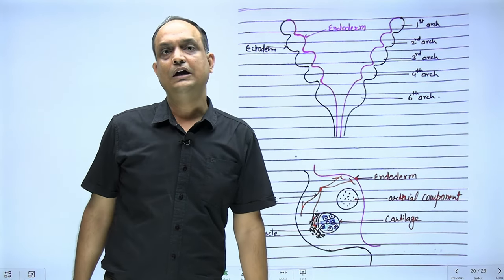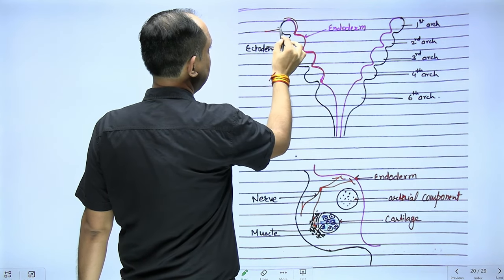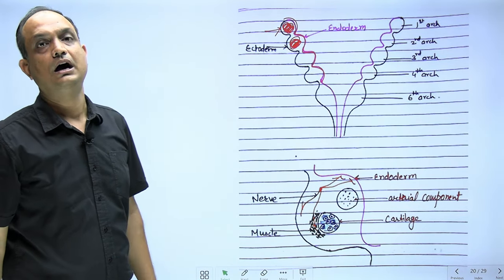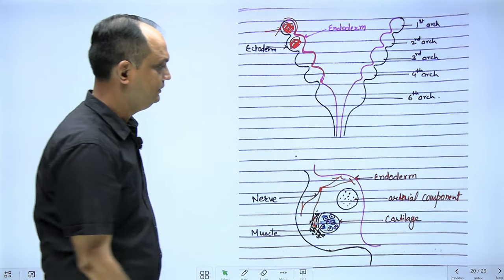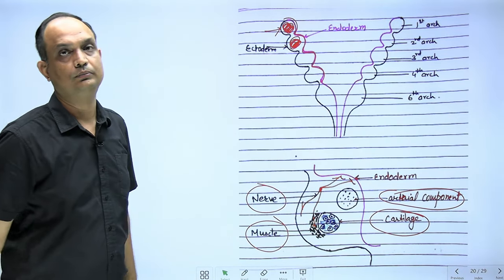In exam diagrams, show each arch lined by endoderm on the inner side and ectoderm on the outside, with the middle mesodermal portion forming the pharyngeal arches. Each arch has four components: arterial, cartilaginous, muscle, and nerve. The key exam concept is that every arch's mesenchyme differentiates to form specific derivatives — cartilage, muscle, nerve, and artery — in each and every arch.